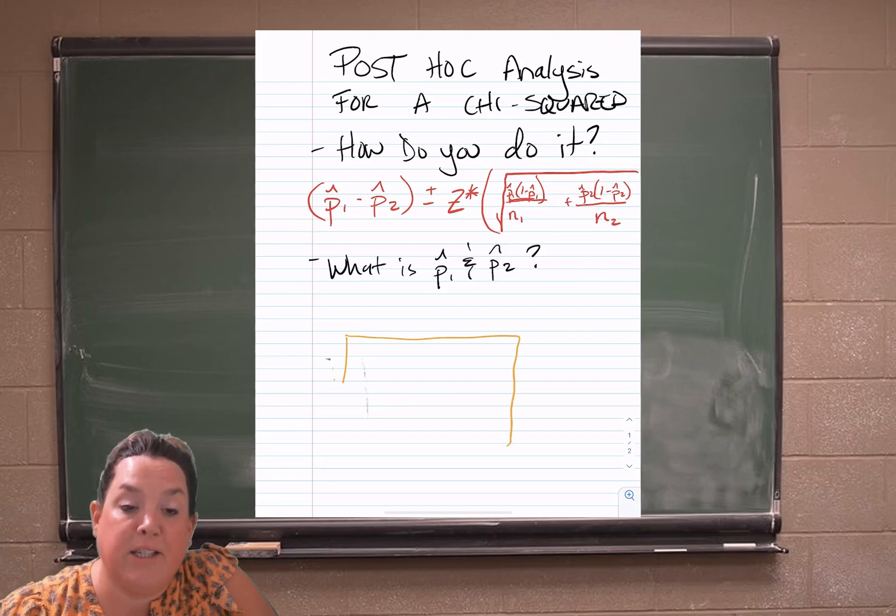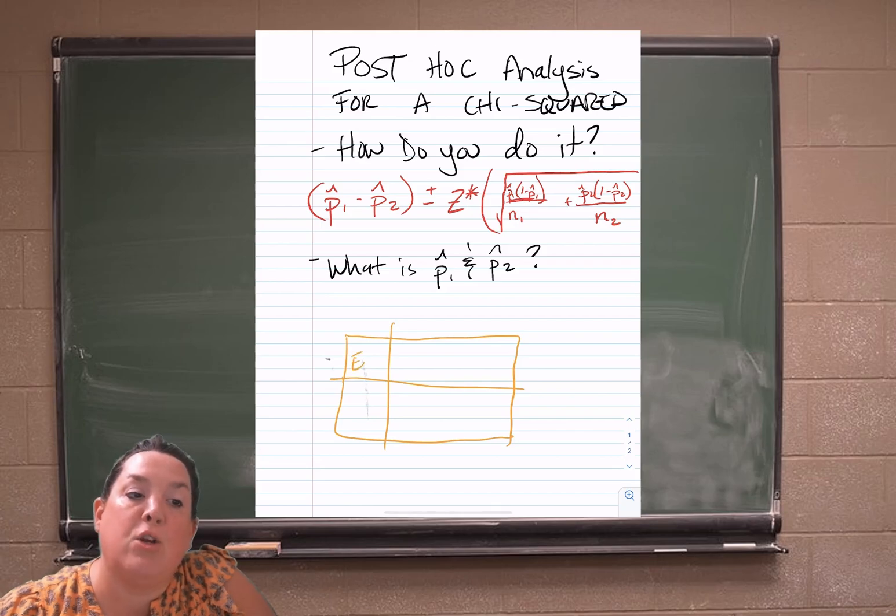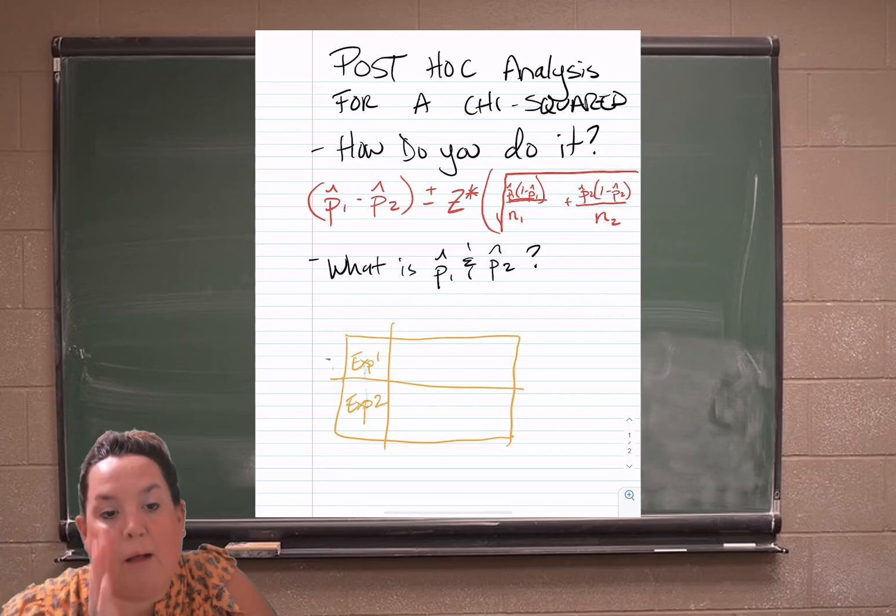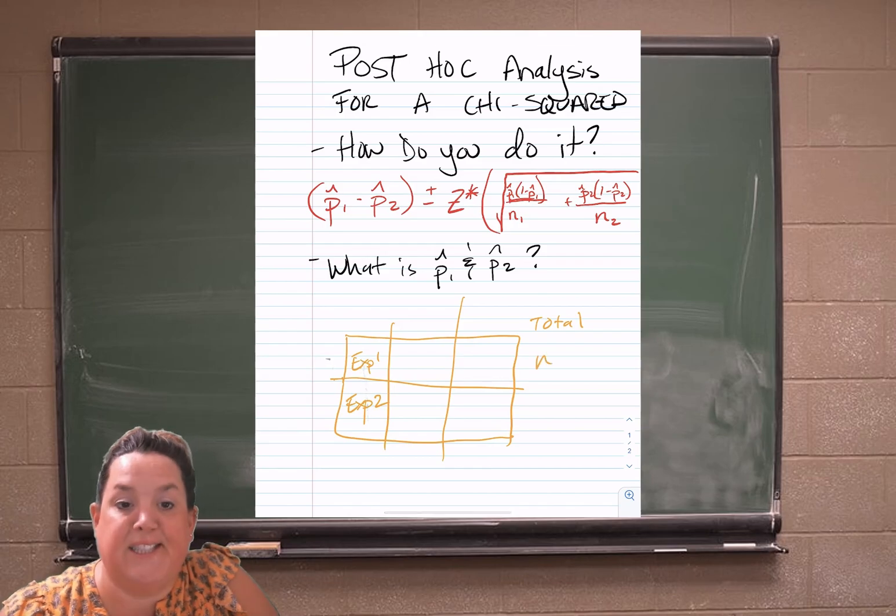So when you make a contingency table or a two-way table, remember those are the options that are in the rows. And then you'll be using those observed counts from whatever column you're interested in. Here I have it in column one, but it could be column two, but they would be in the same column because it's the same option.